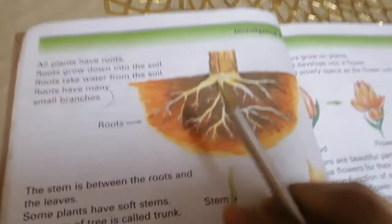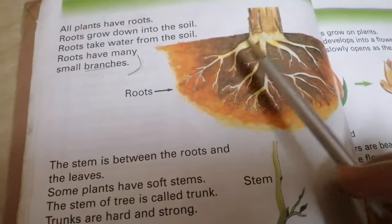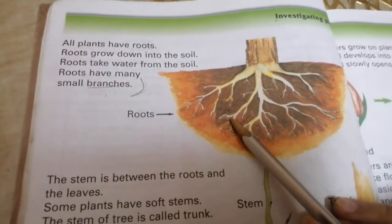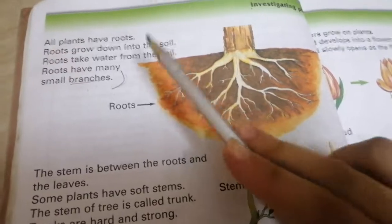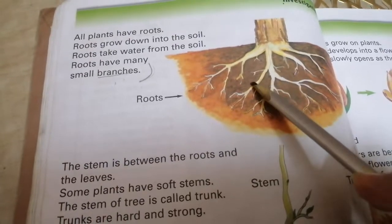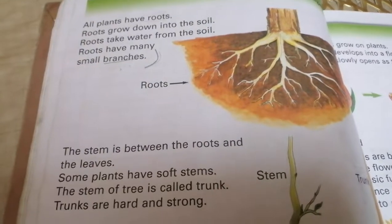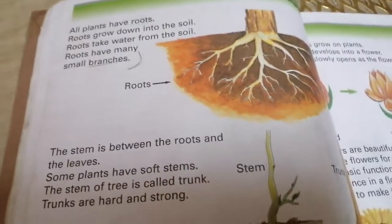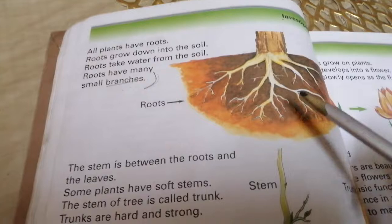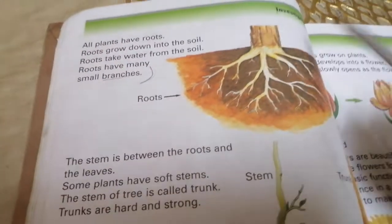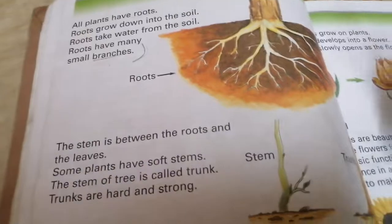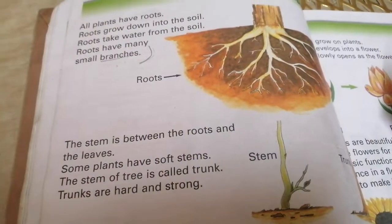The roots. All plants have roots. Where are the roots? In the earth. Roots grow down into the soil. Where are the roots growing? Roots are growing in the soil and they absorb water and take it to other parts. So what do plants need to grow? Water, air and sunlight.